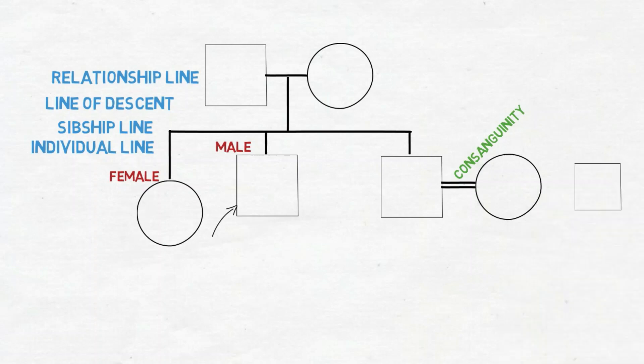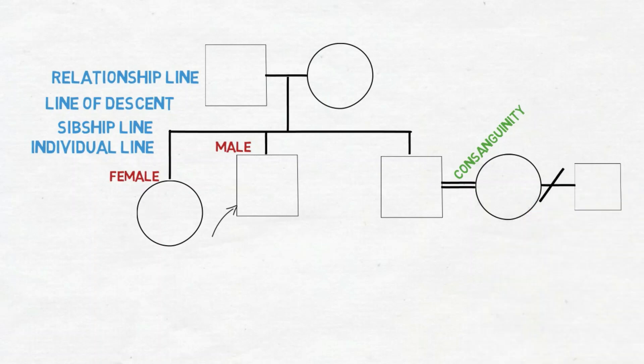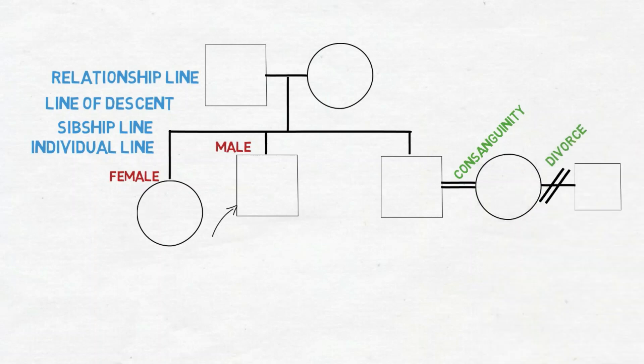And she was previously married to another guy. And to represent a divorce you have a double strike through. So that means that they were previously divorced.